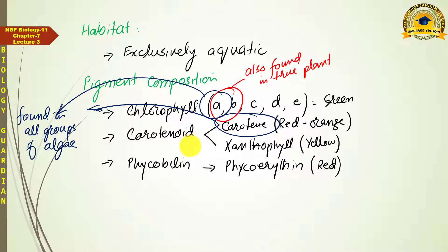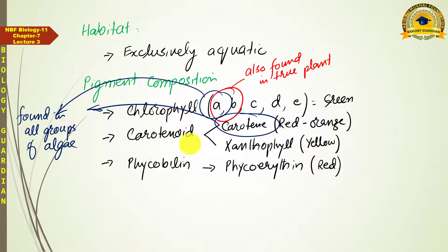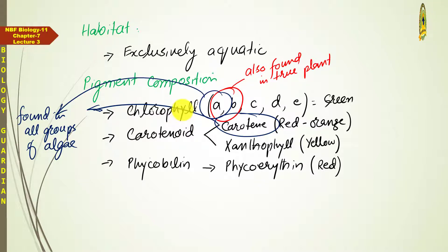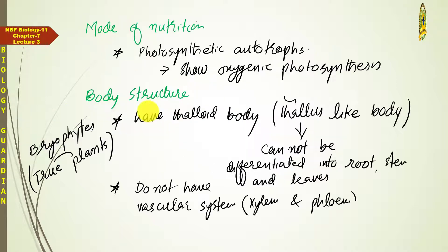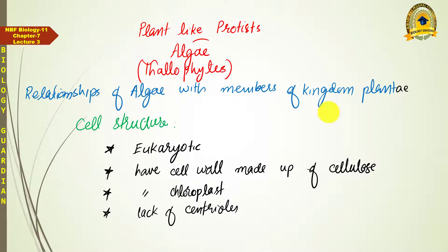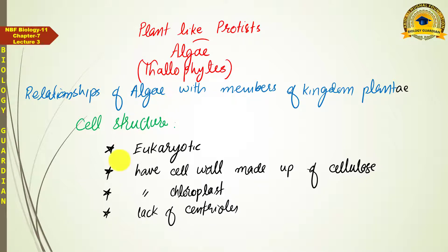Pigment composition is a very important feature, and the classification of algae is actually based on pigment composition — just as protozoa were classified based on their locomotory structures. Similarly, algae are classified into different groups based on their pigment composition. This gives us an understanding of the general characters of algae and their relationship with Kingdom Plantae.